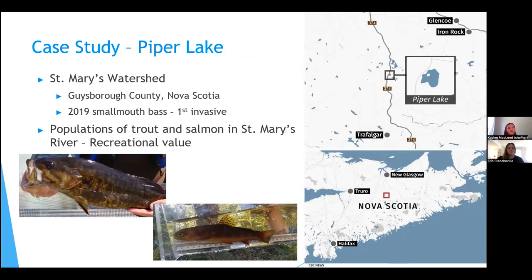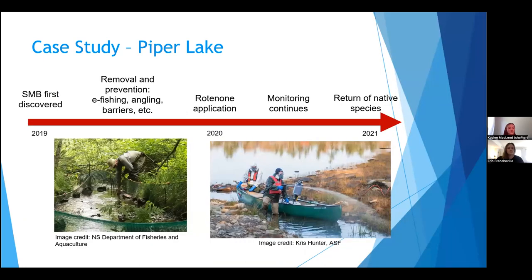Looking at Piper Lake in Guysborough County, Nova Scotia: previously there were no invasive species in this watershed. However, in 2019 an angler caught a smallmouth bass in this lake, causing great concern for managers because there are populations of trout and salmon in this river of high recreational value. Intensive removal and prevention methods were undertaken, including electrofishing, angling, and barriers at the inflow and outflow of the lake. The following spring, evidence showed they had not eradicated all smallmouth bass, so a more intensive approach was taken. In the fall of 2020, the chemical rotenone was applied to the lake. They continued to monitor the lake for evidence of bass removal and for the return of native species as the ecosystem recovered.